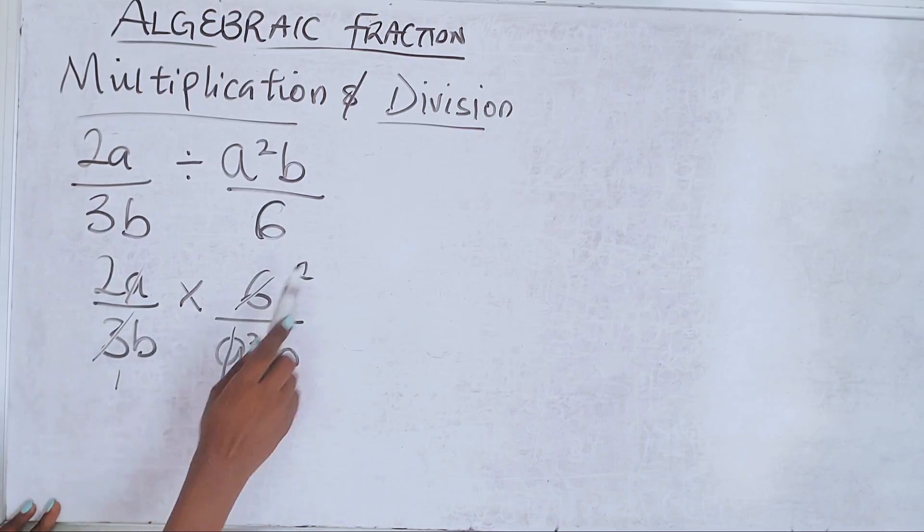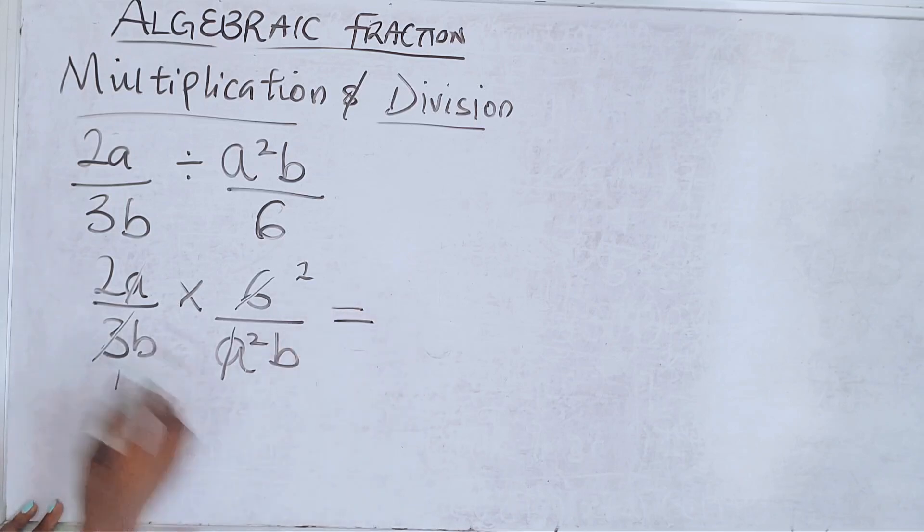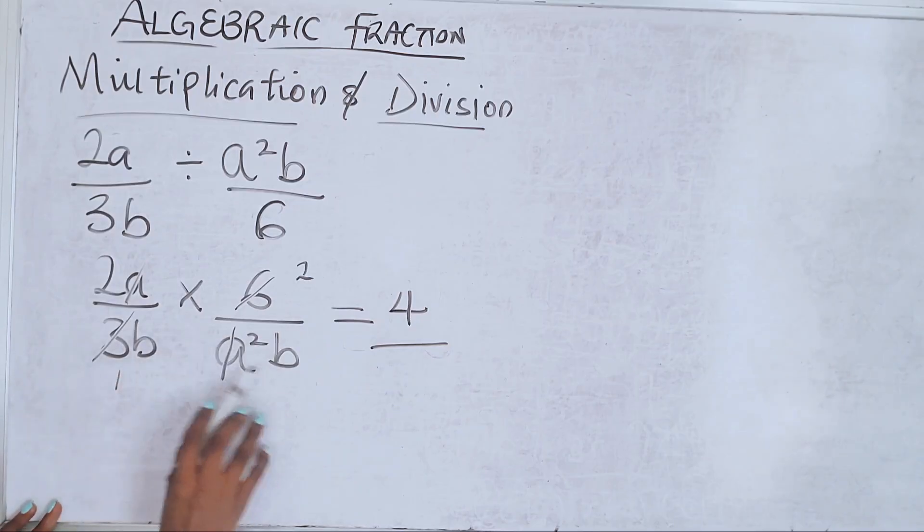You multiply what you have left: 2 times 2 is 4, then b times one a times b gives you 4/ab.